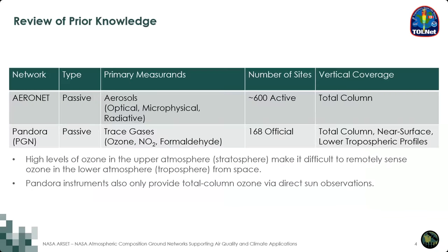To recap: in the first two parts of this training we learned about AERONET, which is a passive remote sensing network providing information about aerosols in the atmosphere. Part 1 gave us an overview of the AERONET network, instrumentation and data products. In Part 2 we saw how to use the AERONET website to access and visualize data, and we stepped through several Jupyter notebooks to read and map AERONET data and create time series and compare AERONET and BEER's AOD.